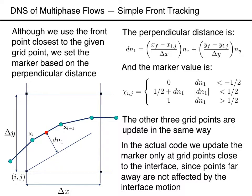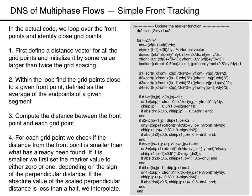To update the value of the marker at each grid point, we set the marker to 0 if the scaled distance is -0.5 or less, 1 if the distance is more than 0.5, and if it is between -0.5 and +0.5, we interpolate and set it equal to half plus the distance. Here we show how we set the marker value for the lower left corner of the grid cell. The values for the other three grid points are set in the same way. A code to update the marker function next to the front is all contained in one loop over the front points.